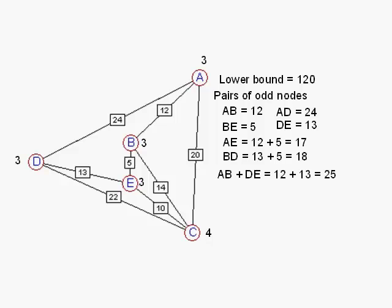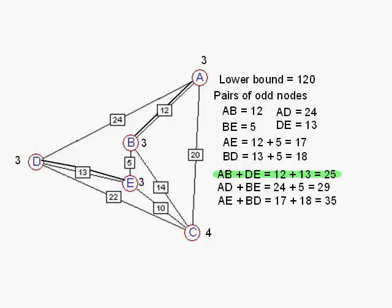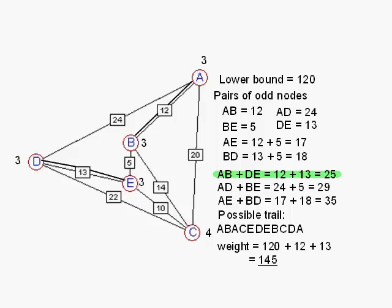We look at the various pairings of odd nodes: AB and DE, AD and BE, and AE and BD. That's the total number of possible pairings of the odd nodes, three of them. We see that the one of least total weight is AB and DE. So all we have to do is duplicate or add extra arcs along those two arcs, and we have got a Eulerian graph now. A possible trail is one like that. If I start and end at A, I must visit A three times. Everywhere else is going to be visited twice. Total weight is 120 plus 12 plus 13, which is 145.